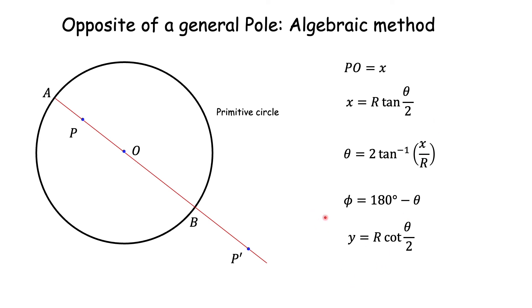I take R tan phi by 2 which turns out to be R cot theta by 2 because of phi being 180 minus theta. I know now Y and I can go a distance Y from O to locate P'. OP' is Y and I am able to locate P'.